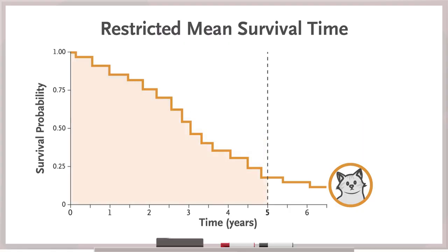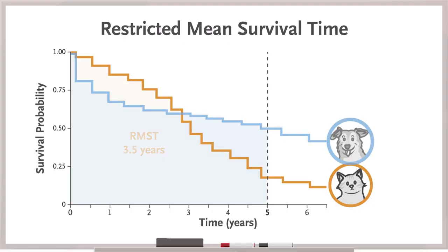So let's focus on your cat couch data. You see that the restricted mean survival time for these couches was three and a half years. Dog-exposed couches, on the other hand, survive six months longer over five years. Well, that seems like a pretty intuitive and useful metric.